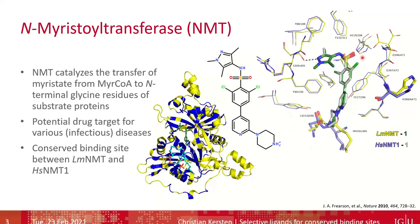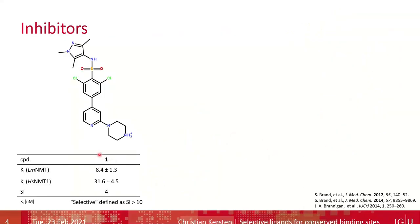If we now compare our target LmNMT and the off-target HsNMT1 — keeping yellow for LmNMT and blue for HsNMT1 — we see in the binding site defined as 6 Å around the ligand many identical residues with identical orientation. But we also find three differences: on the right-hand side there is histidine in LmNMT and asparagine in HsNMT1, but the side chain is oriented far away from the ligand and not forming any interactions. The same accounts for the other two differences at the C-terminal residues: methionine 420 and leucine 421 in LmNMT, and leucine 495 and glutamine 496 in HsNMT1 — again with side chains oriented away from the ligand.